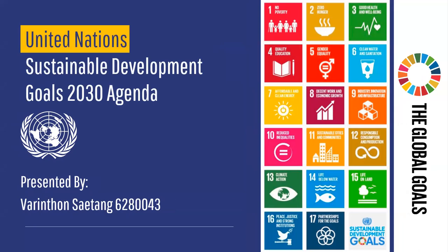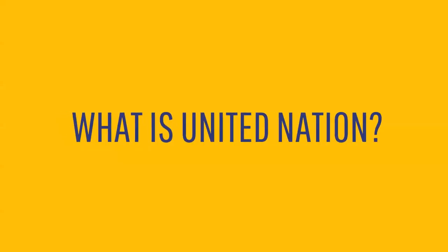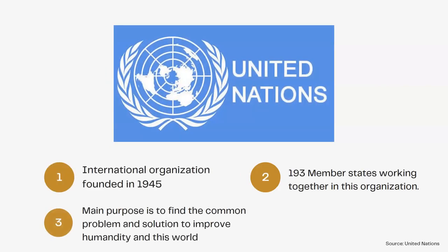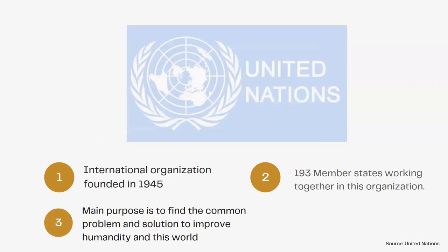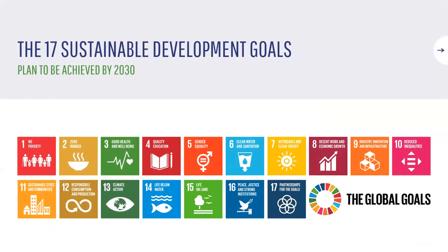Good morning, everyone. Today I'm going to discuss the United Nations' Sustainable Development Goals 2030 agenda with you. United Nations is an international organization founded in 1945, and by now there are 193 member states working together. In 2015, every member agreed that people and planet need an urgent call for improvement, leading to the UN Sustainable Development Goals to be achieved by 2030. The agenda includes 17 goals shown below here.